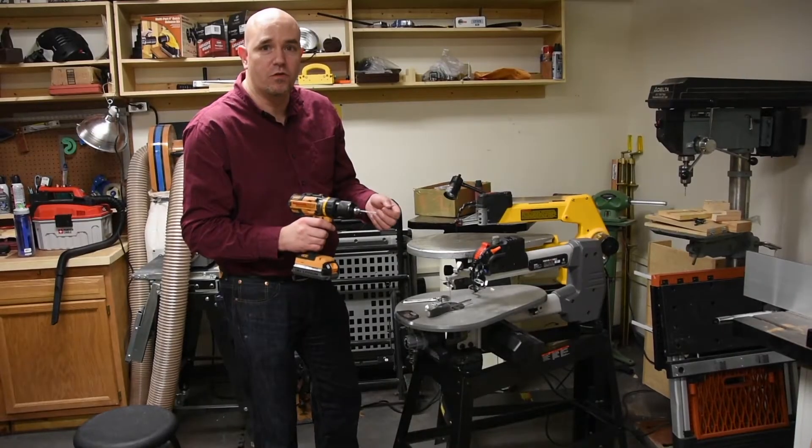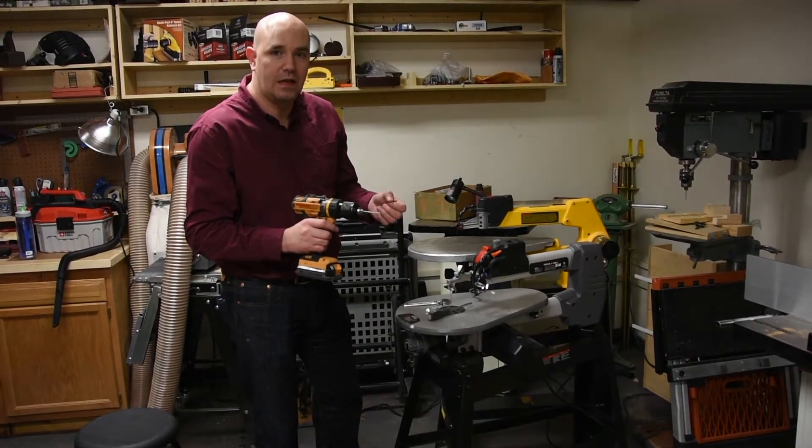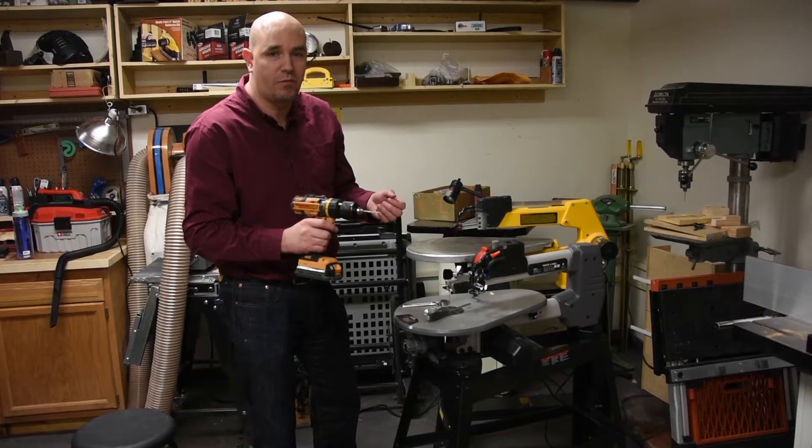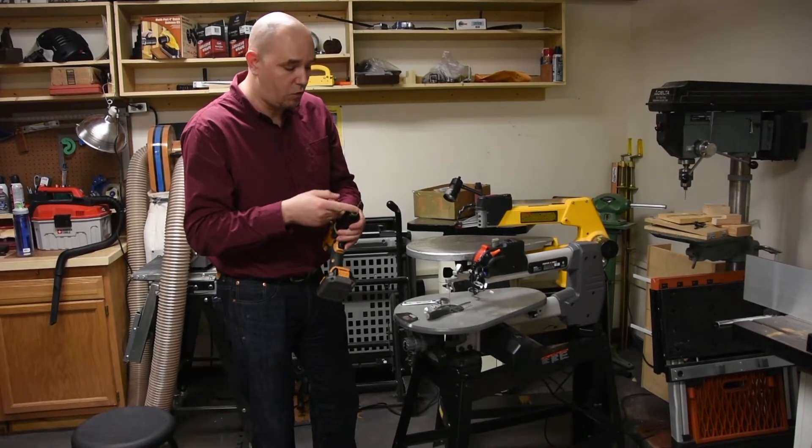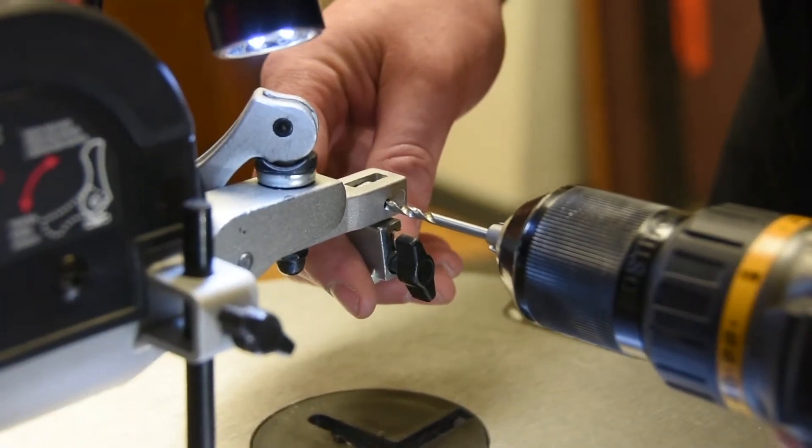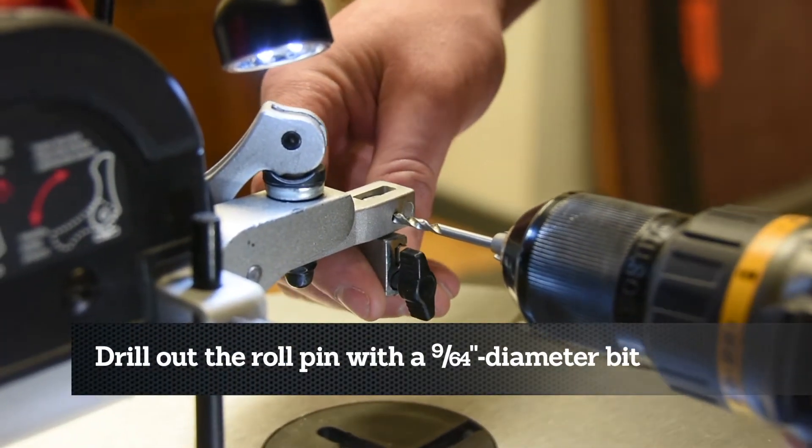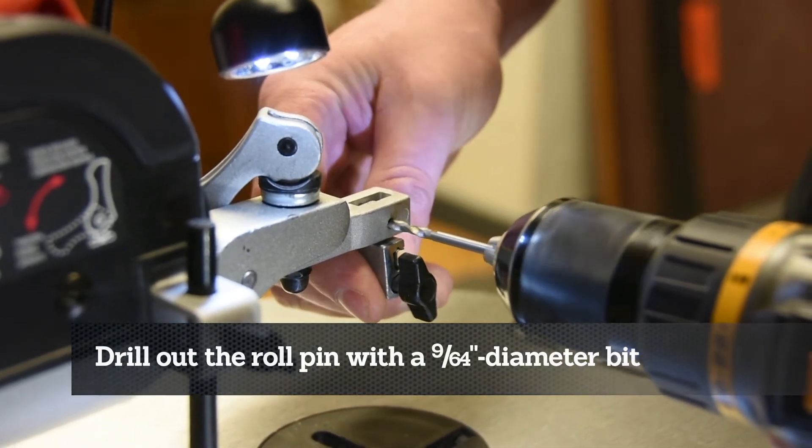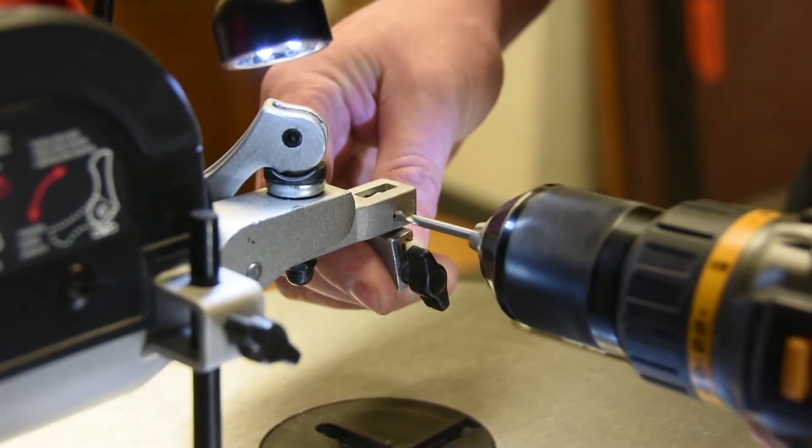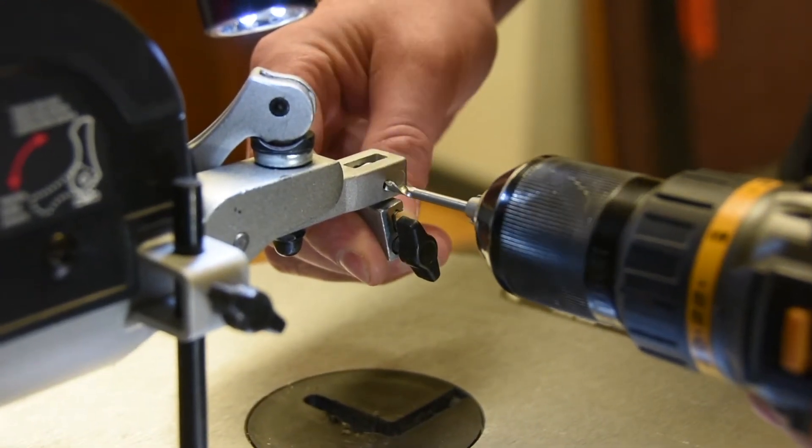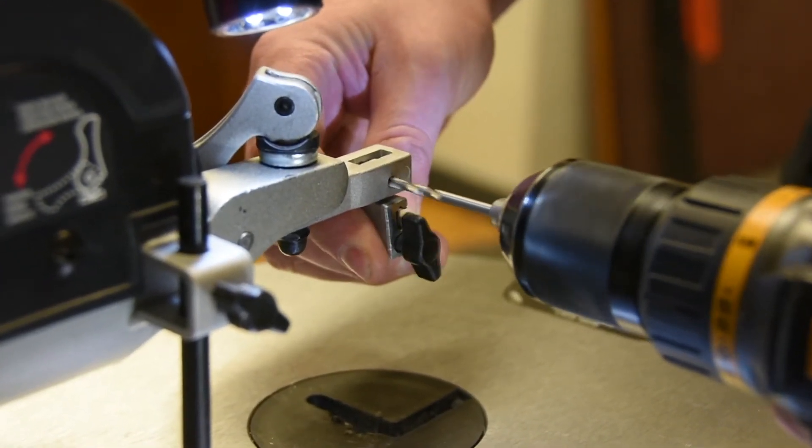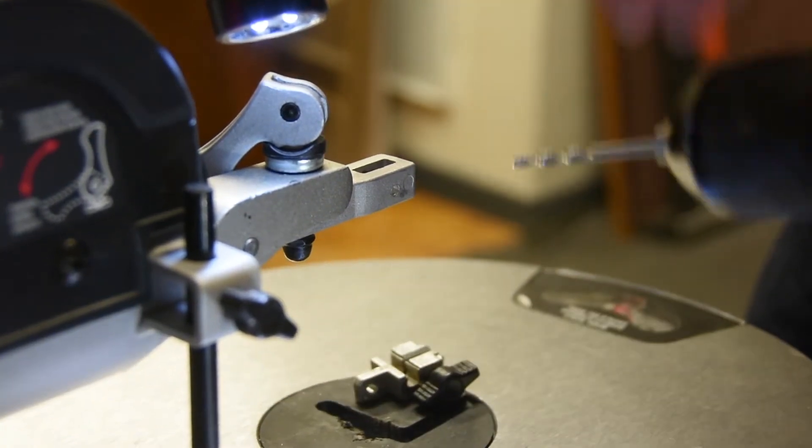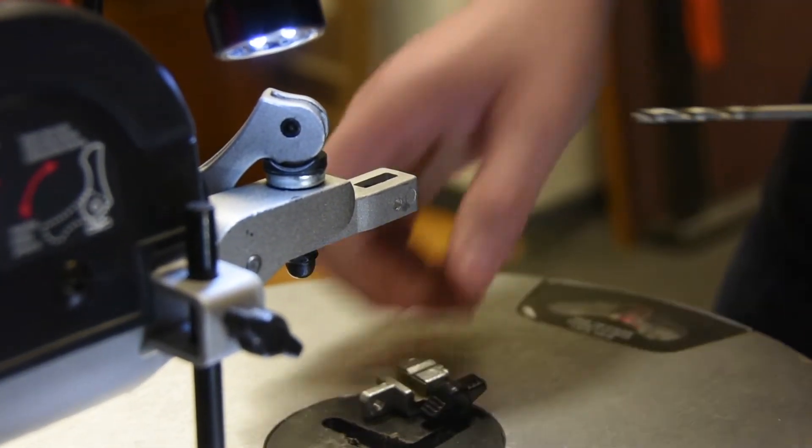It's probably possible to use some sort of pin and a clamp to push the roll pin out, but since I had to re-drill the hole to accommodate the screws, I decided to just drill the roll pin out. So to start with, you drill out the roll pin with a 9/64-inch diameter bit. I've already drilled this one most of the way out, but I wanted to show you a little bit of what it looks like. That will come free and then we can start putting screws and washers in to secure it down.